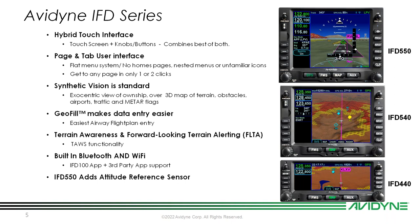We also have FLTA — forward-looking terrain alerting. Think of it as almost like TAWS Lite. It's not a certified version of TAWS, but it gives you a lot of the same functions as far as terrain awareness and alerting. That's another feature that's free and included standard in all of our IFDs.